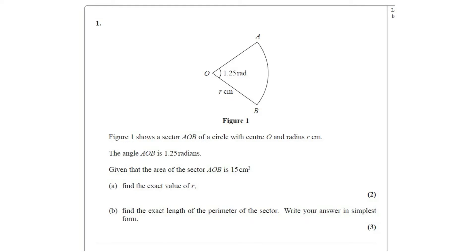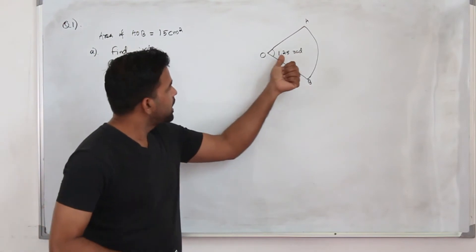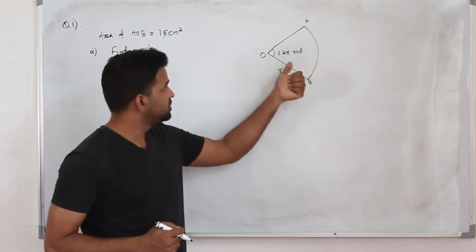Part A: find the exact value of R. This question has two marks. In part B, find the exact length of the perimeter of the sector. Write your answer in simplest form. This question has three marks.